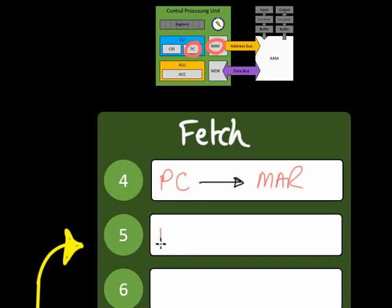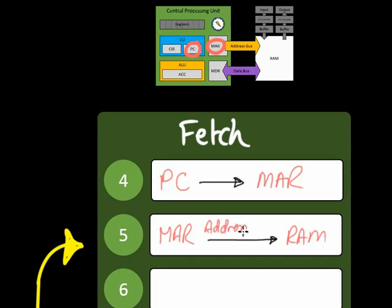The value in the memory address register is passed to the RAM — the random access memory — along the address bus. The location of the first instruction, command, or data that the program contains is passed from the memory address register through the address bus to the RAM. The RAM itself has built-in computational systems which access the memory.